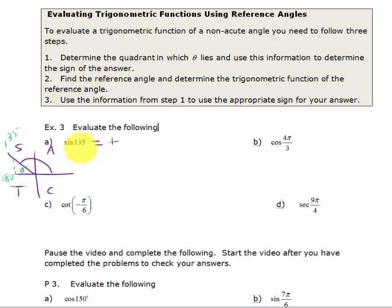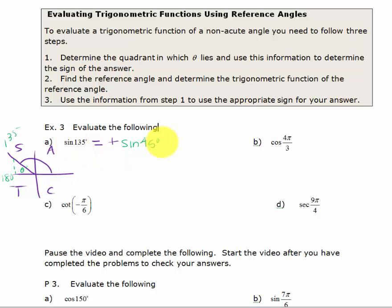So I know that the sine of 135 degrees is going to equal the sine of 45 degrees. We use sine because we know our original angle falls in the second quadrant, and we use the reference angle because the ratio of the sides of that triangle are the same as the trigonometric function of the sine of 135. If you know the sine of 45 — which you should know from memory or from your triangles or that table — the answer is going to be the square root of 2 over 2.